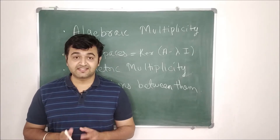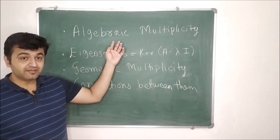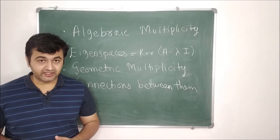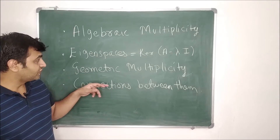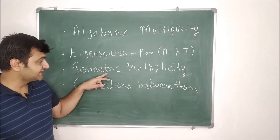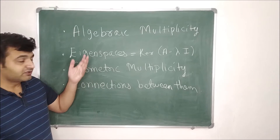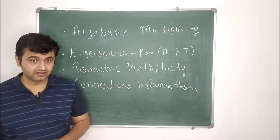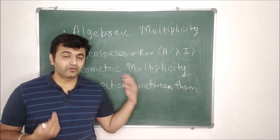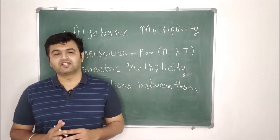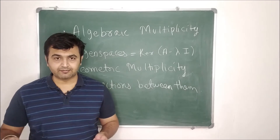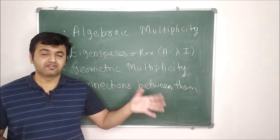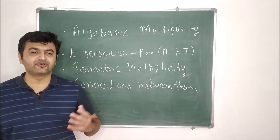Hey everyone. Today we will see the notion of algebraic multiplicity, the notion of eigenspaces, then the notion of geometric multiplicity. We will see the connection between eigenspaces and geometric multiplicity, and also the relation between algebraic and geometric multiplicity. I will take an example and side by side connect the concept with that example, so it will be easy to understand.